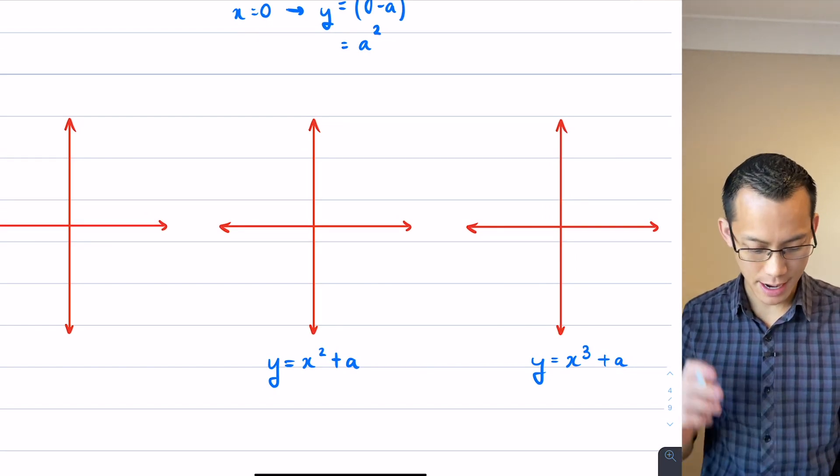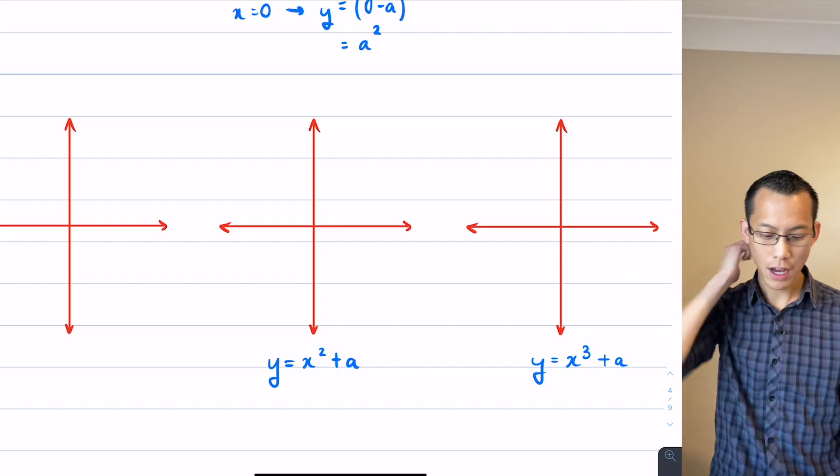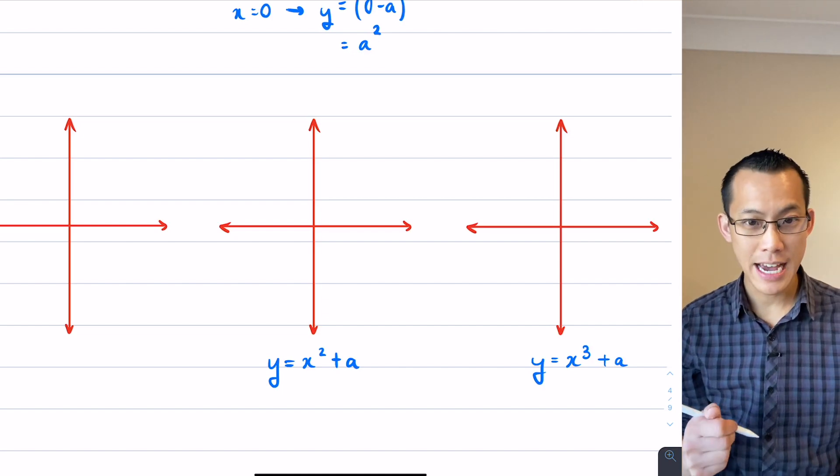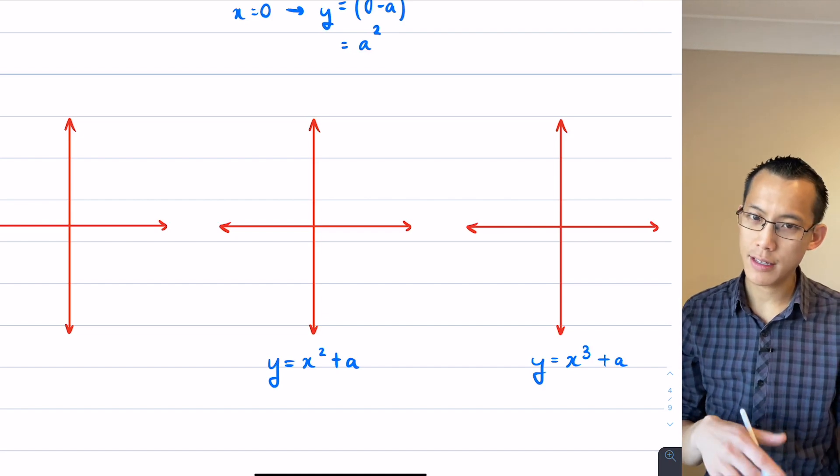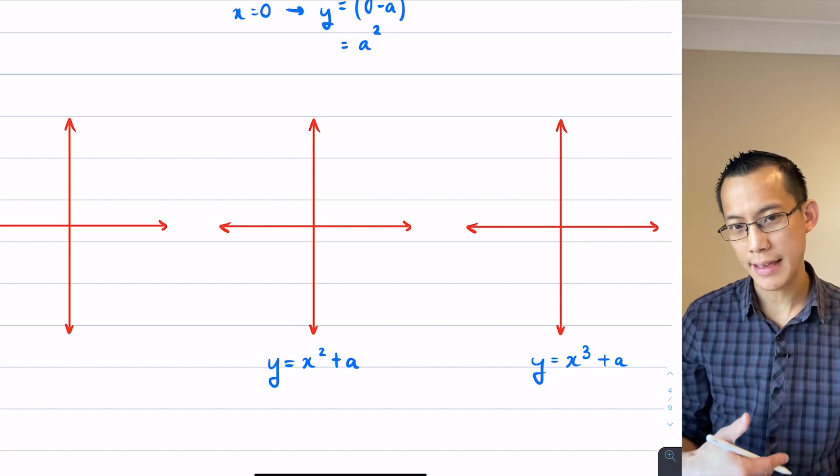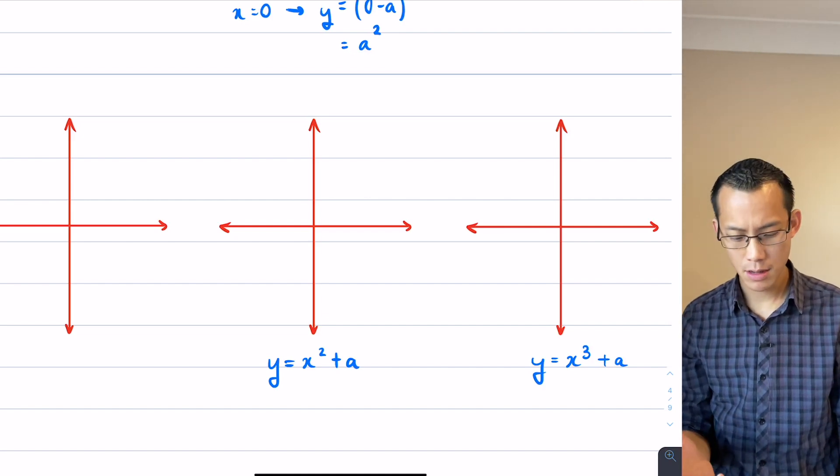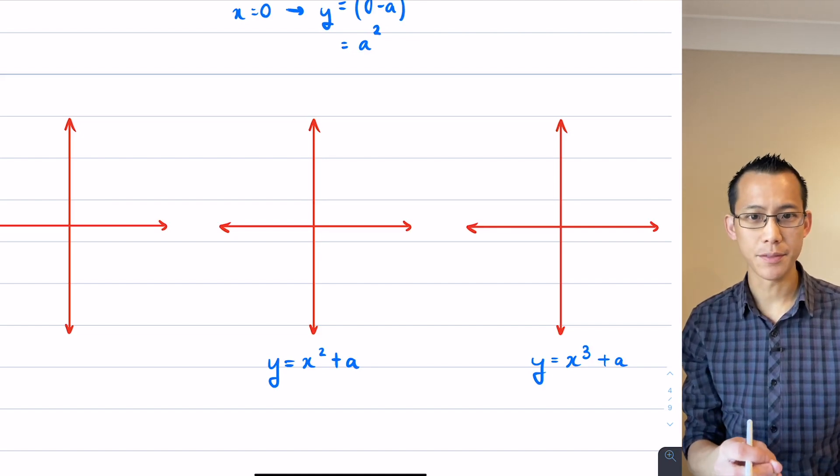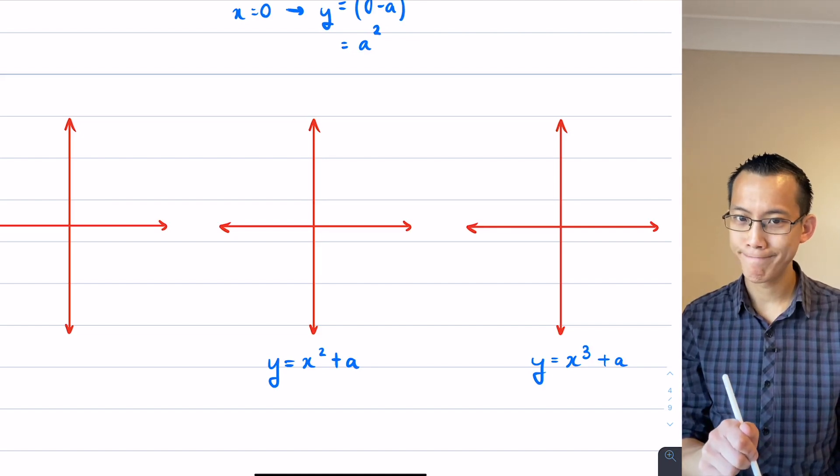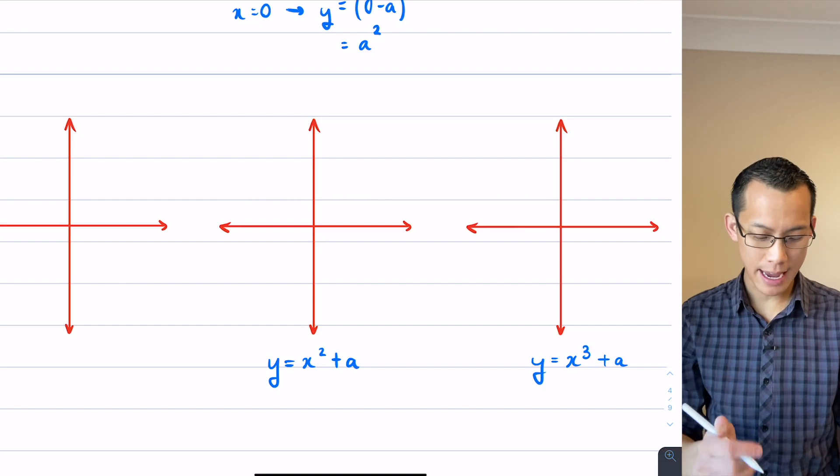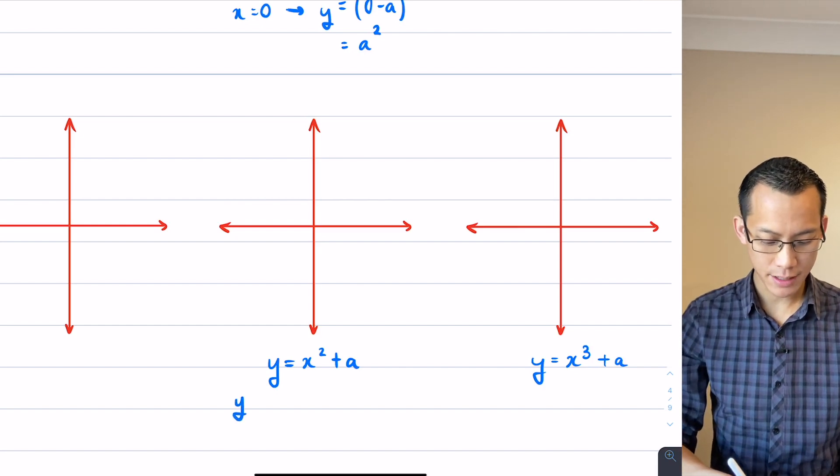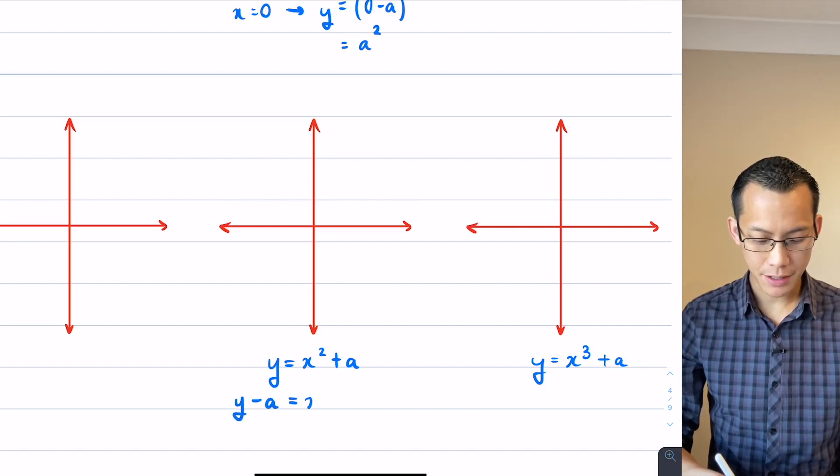I put a plus A on the right hand side, and some people think of this as the up-down movement. But I want you to see this is actually not the most helpful way to write it to make that up-down movement obvious. What's that A really changing? The answer is, it's not changing X. That plus A really belongs over on the left hand side as a minus A.